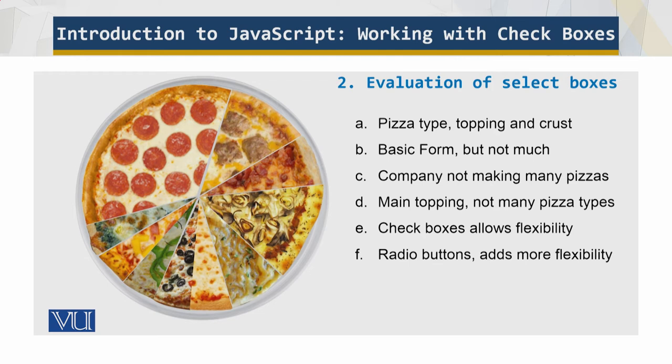Future examples in this module expand on this form. Pizza type, topping—now there is the pizza type, then there are three types of crust also, and there are many many toppings which were not covered in the previous one. In the previous slide I showed the basic form that is not very interesting. The company was not making many pizzas.